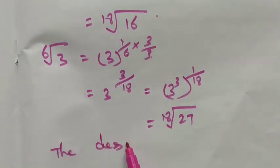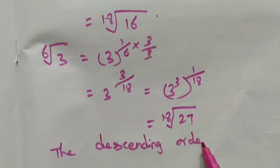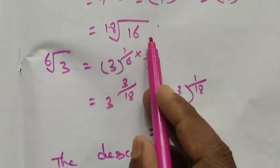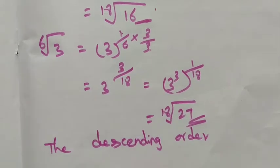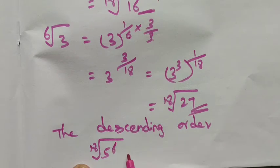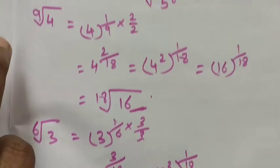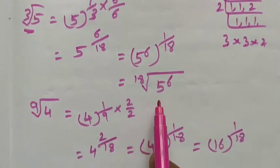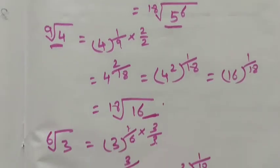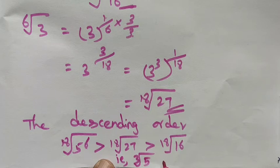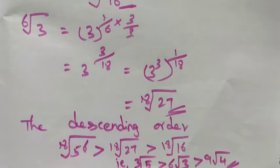Now we arrange in descending order. The highest value is 18th root of 5 power 6, then 18th root of 27, then 18th root of 16. So: 18th root of 5⁶ > 18th root of 27 > 18th root of 16. Converting back to original form: cube root of 5 > 6th root of 3 > 9th root of 4. This is the descending order of the given surds.